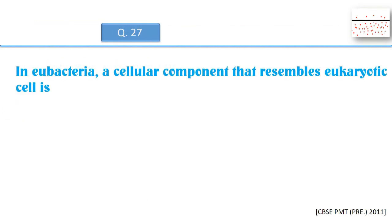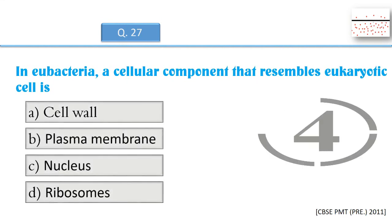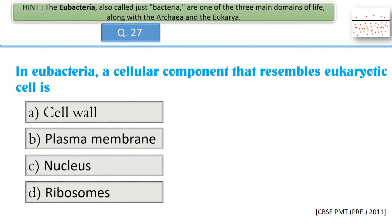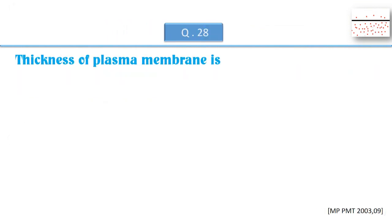In eubacteria, a cellular component that resembles a eukaryotic cell is? Thickness of plasma membrane is?